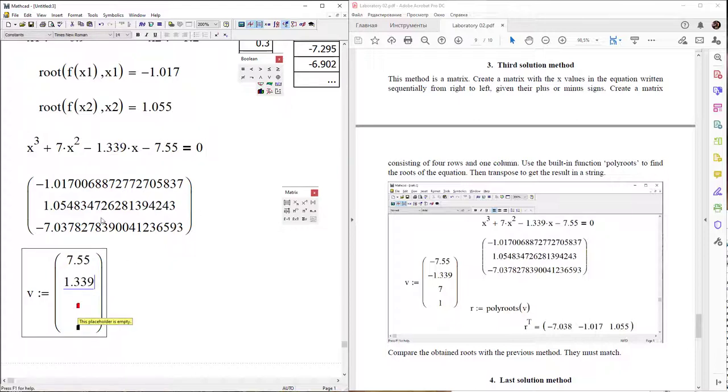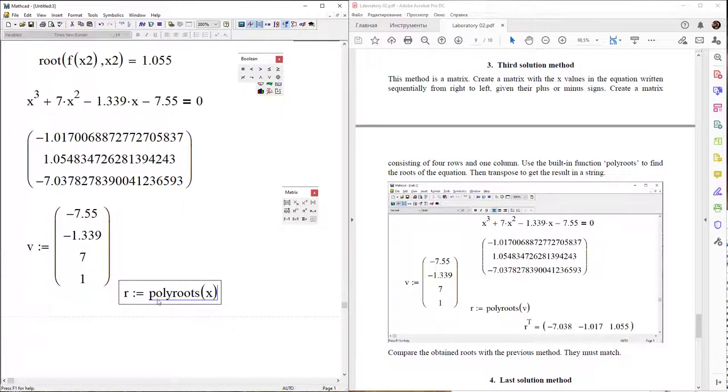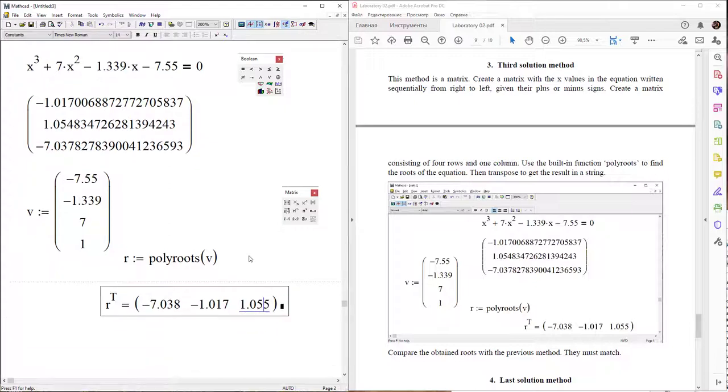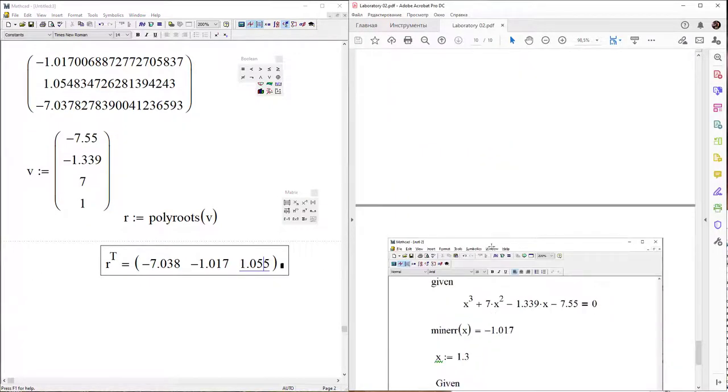Enter these values with the appropriate signs, minus or plus, 7 and 1. Next, use the polyroots function to find roots and use the operation of matrix transpose to transpose these values. These values equals another values, so our solution is correct.